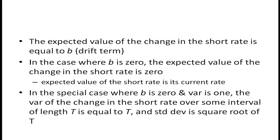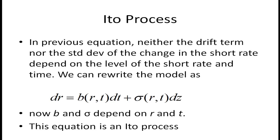In the previous equation, neither the drift term nor the standard deviation of the change in the short rate depended on the level of the short rate or time. We can rewrite this model as dr equals the drift term — which is a function of the current level of interest rates and time — times dt, plus the standard deviation — also a function of the interest rate and time — times dz. We refer to this equation as an Ito process.